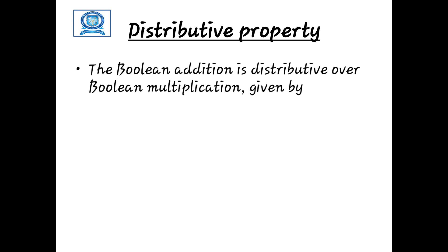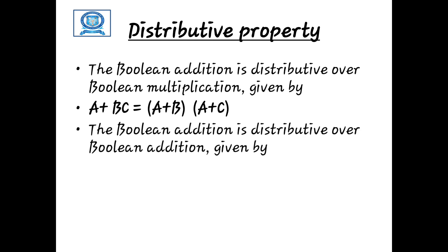The third property is called the distributive property. For three binary variables a, b, and c, according to this property a plus (b times c) is equal to (a plus b) times (a plus c). This is called the distributive property for addition.